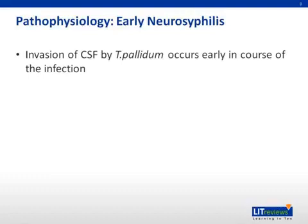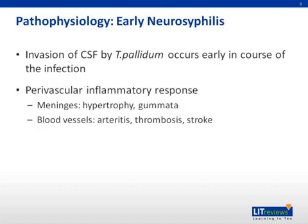Neurosyphilis begins with the invasion of the cerebrospinal fluid by the spirochete Treponema pallidum, which occurs early in the course of the infection. As a result, clinical neurosyphilis can present at any time beyond the primary stage. A cellular hypersensitivity reaction is thought to be triggered; however, the body's immune response is not sufficient to be protective, but substantial enough to cause tissue damage. This inflammatory response leads to perivascular infiltration of the meninges with lymphocytes and plasma cells, producing focal meningeal inflammation that can lead to hypertrophic meninges or gumata. Perivascular infiltration of the arteries produces arteritis, luminal occlusion, thrombosis, and stroke — these are secondary manifestations.